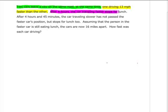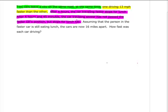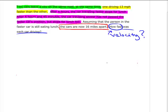After four hours, the car traveling faster stops for lunch, and after four hours and 45 minutes, the car traveling slower has not passed the faster car's position but stops for lunch too. Assuming that the person in the faster car is still eating lunch, the cars are now 16 miles apart. How fast was each car driving? We're looking for a velocity or a rate. So we're going to have to use our formula: distance is equal to rate times time.